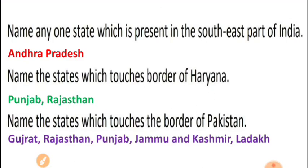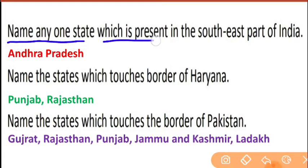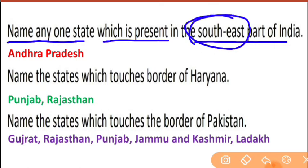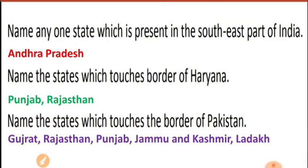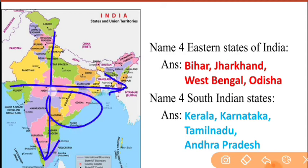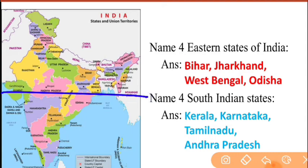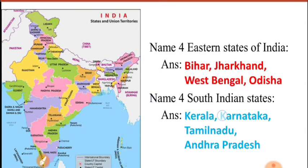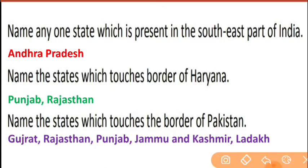Next question: name any one state which is present in the South East. South East is the direction between South and East on the map. If you look at that corner of India, Andhra Pradesh falls in the South East. So the answer is Andhra Pradesh — it lies on the South East coast of India.